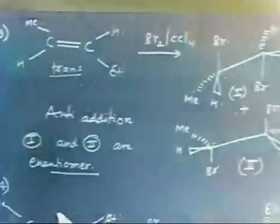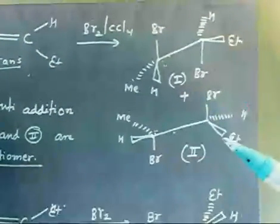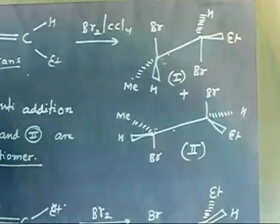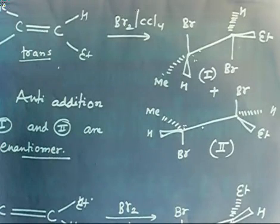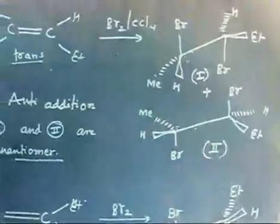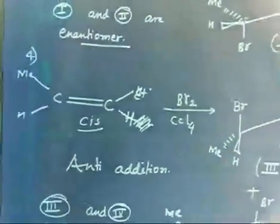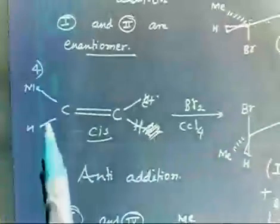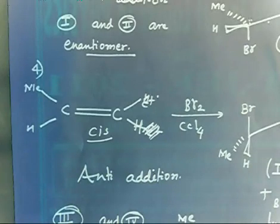So I am getting an enantiomeric mixture. You see: if I initially have trans, which is optically inactive, my final solution is also optically inactive because I am getting an enantiomeric mixture. In addition reactions, if the initial reactant and reagent are both optically inactive, the product has to be optically inactive — so I have to get the racemic mixture. Now the last one: if you take the cis of this compound — cis double bond with Et and Me, add bromine in CCl4 — everybody can do this. I will wait for 30 seconds.